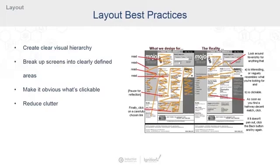These four practices include having a clear visual hierarchy, breaking up your screens into clearly defined areas, making it really obvious what's clickable, and reducing the overall clutter on your screens.